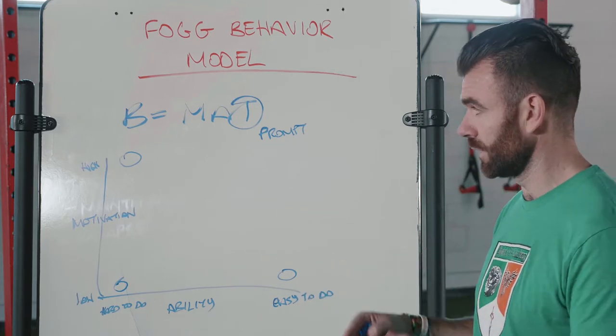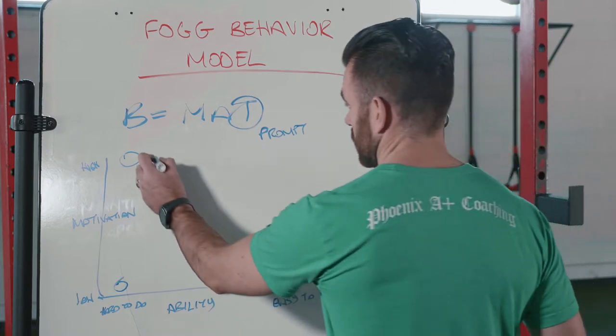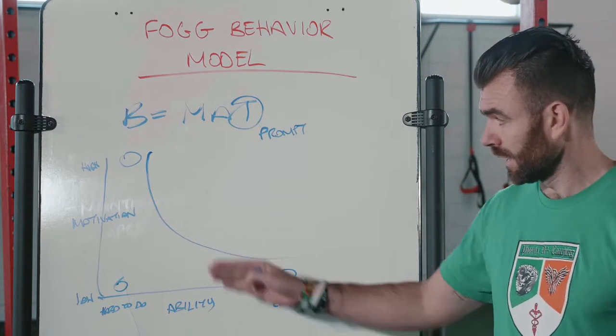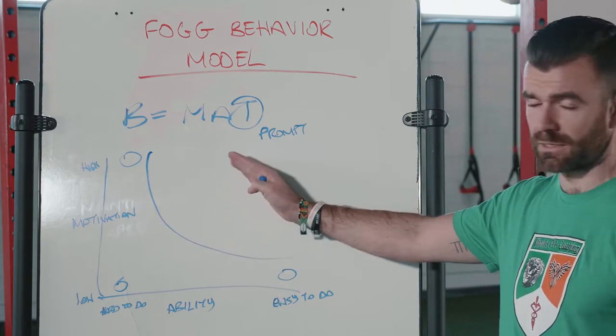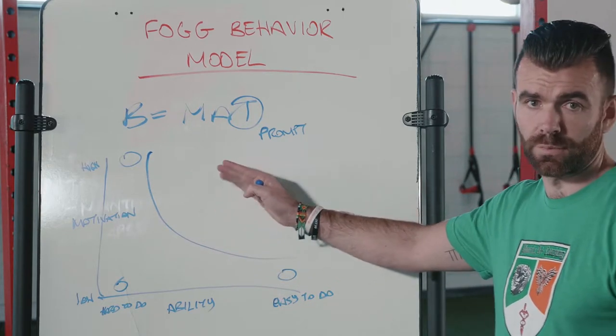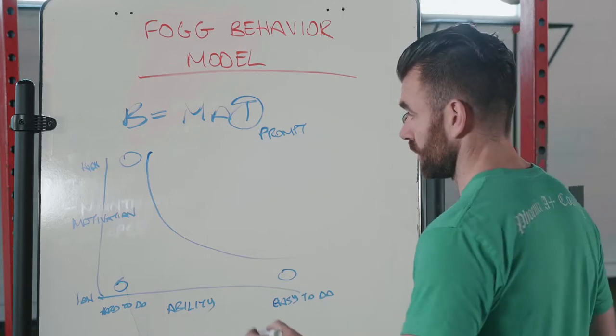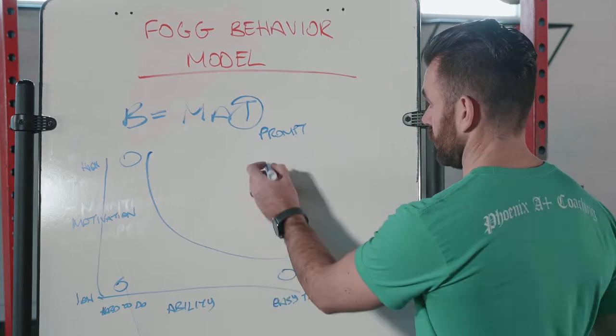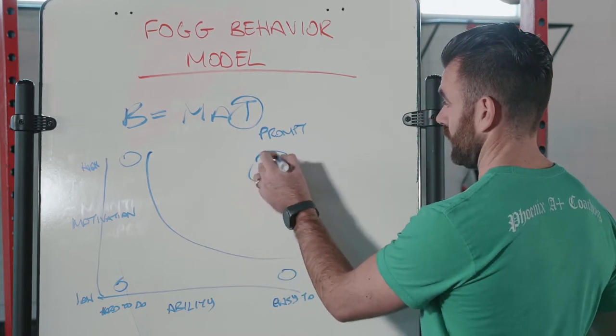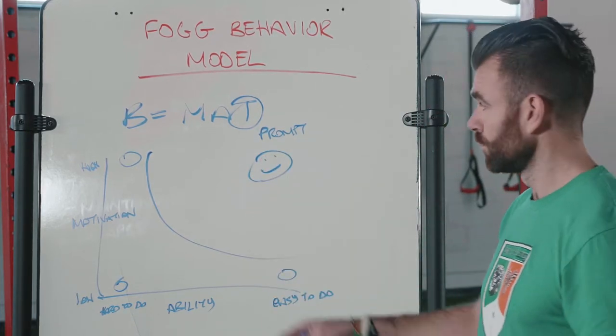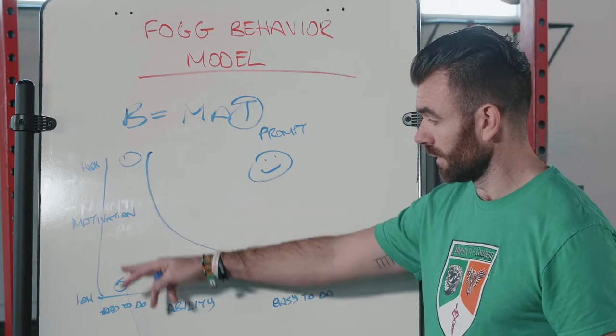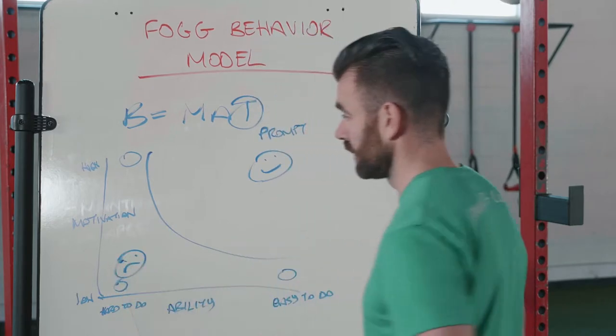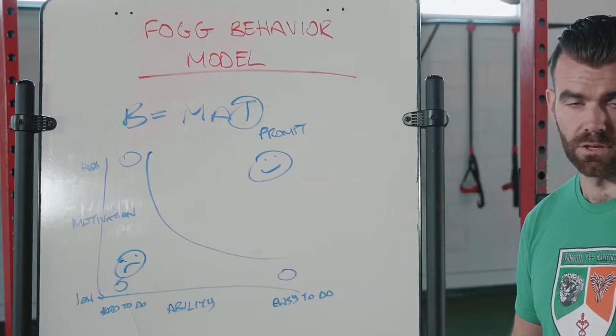I'm going to show you the difference between the two and how behavior will actually change. We have this line here, and anything on this side of the line is basically going to be behavior that will change. So say you're highly motivated and it's easy to do, then the behavior changes. But if you're highly motivated and it's hard to do, it's going to be less likely that it's going to happen.